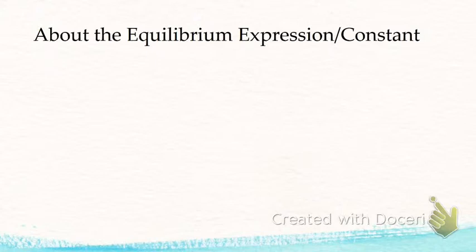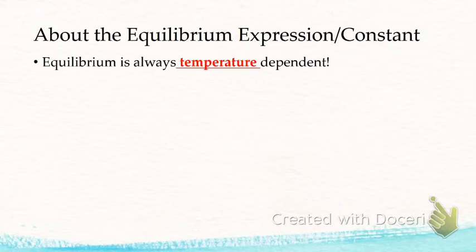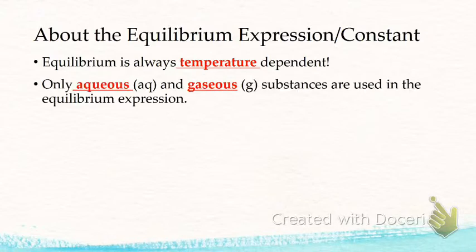About the equilibrium expression constant. What does this mean for us? First of all, equilibrium is always temperature dependent. It depends on temperature. If I change the temperature, I change my equilibrium constant. It is temperature dependent. When we're doing our calculations for K, you only include things that are aqueous or gas. Only aqueous or gas. So if I'm looking at a balanced equation, I have to pay attention to my states of matter. So only aqueous things and gaseous things.